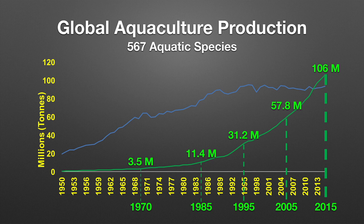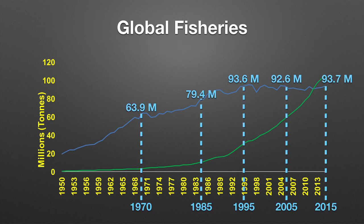What is global aquaculture? With 567 aquatic species being cultured, this is a huge global effort. This graph shows that aquaculture in the 1950s was minimal. In 1970 the total production was 3.5 million tons; by 1995 it reached 31.1 million tons; and more recently in 2015 it has reached 106 million tons.